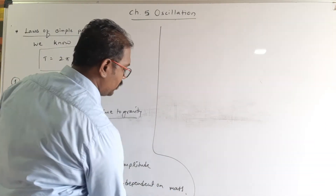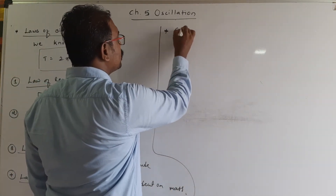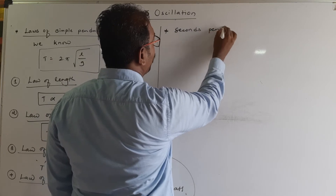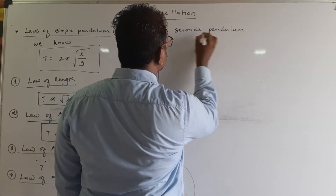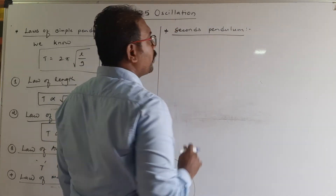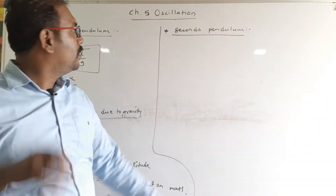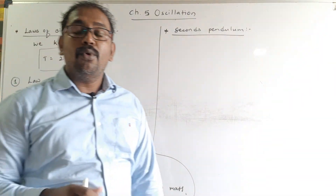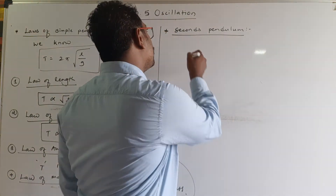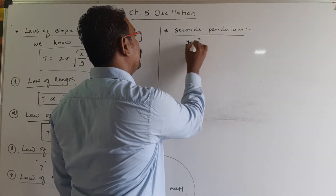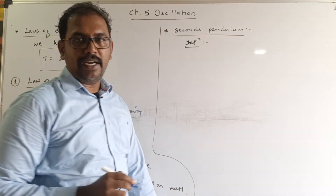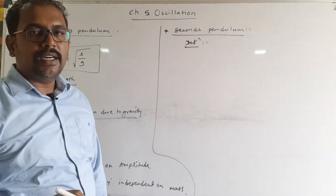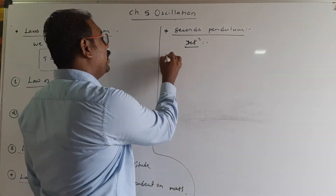After that, the next topic is the seconds pendulum. A seconds pendulum is a simple pendulum whose time period is two seconds. A simple pendulum with a period of two seconds is called a seconds pendulum.